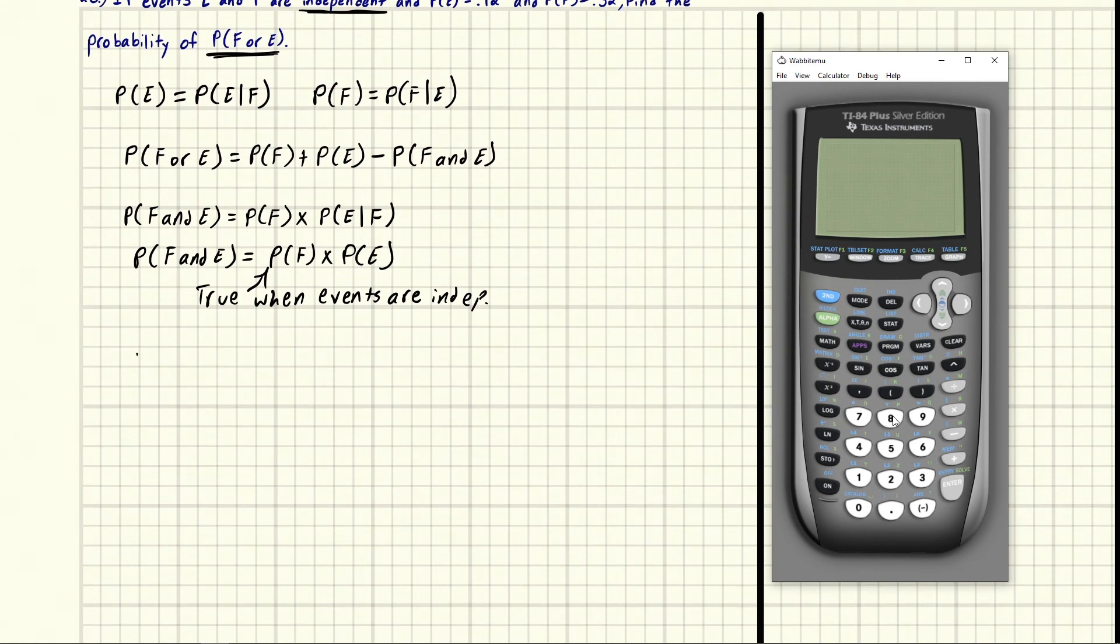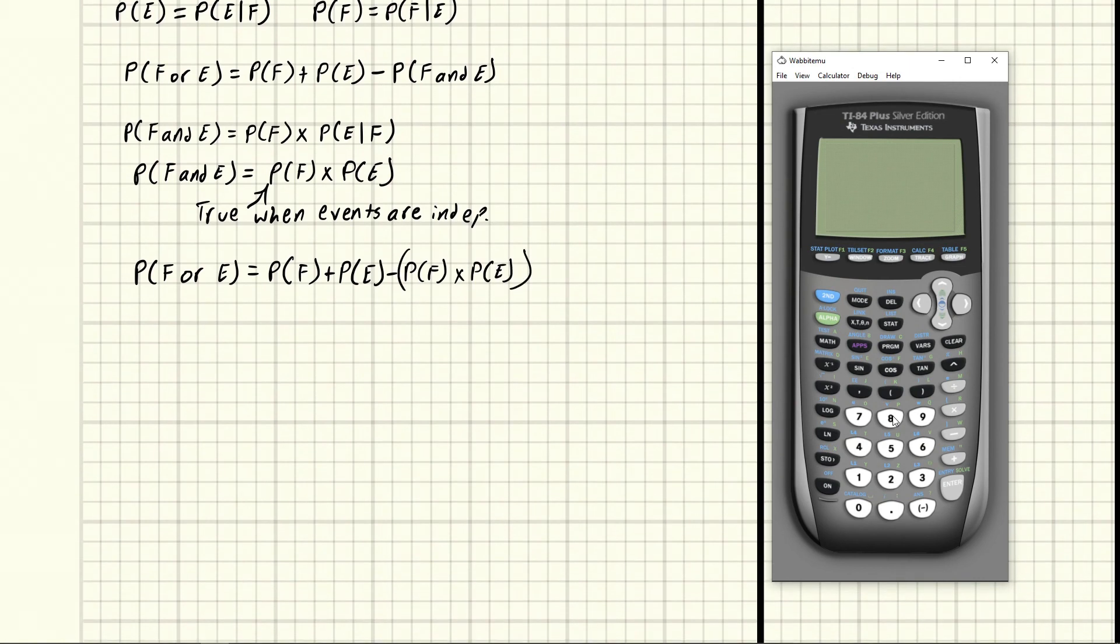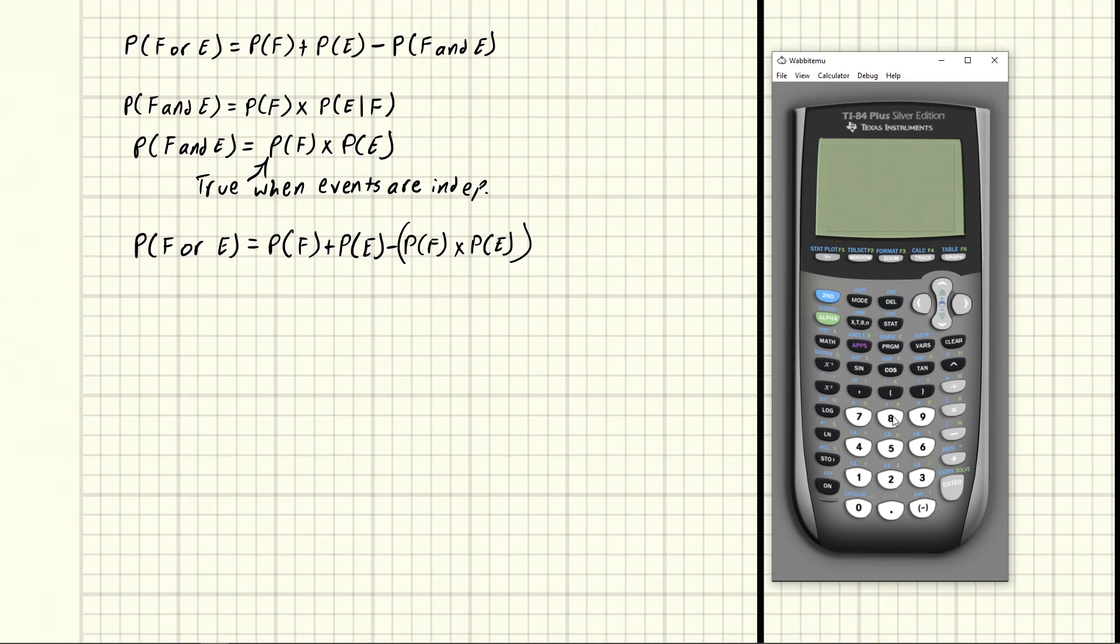Now we can say the probability of F or E has to be equal to the probability of F plus the probability of E minus the probability of F and E. And the probability of F and E is equal to this business, so that's minus the probability of F times the probability of E. I'm going to put parentheses around these so we don't get confused with the order of operations.